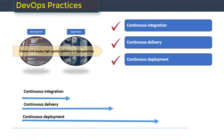Through continuous delivery, high-quality software is ready to be deployed quickly to production, reducing risk while ensuring speed and fast time to market. The third practice is continuous deployment, which is similar to continuous delivery except that delivery is automated all the way to production, not merely to a staging environment. In general, unless you are confident of auto-deployment, this practice is usually not recommended. Most organizations prefer to take the process all the way to continuous delivery and then wait for a manual check and validation of other dependencies.